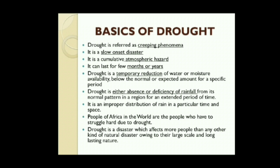Drought is referred to as a creeping phenomena. It is a slow-onset disaster. Generally speaking, it is difficult to demarcate the onset and offset of a drought. It is a cumulative atmospheric hazard, i.e. it is related to weather phenomena, but becomes intense due to human activities.